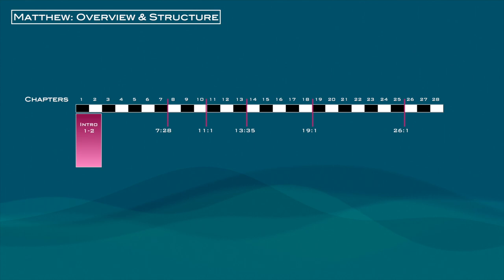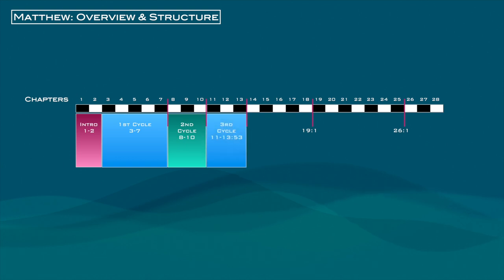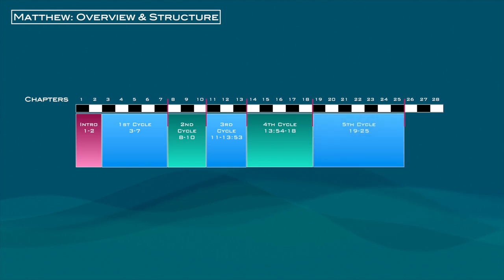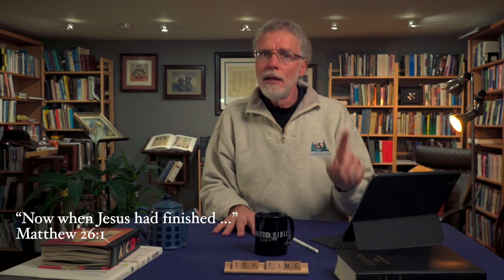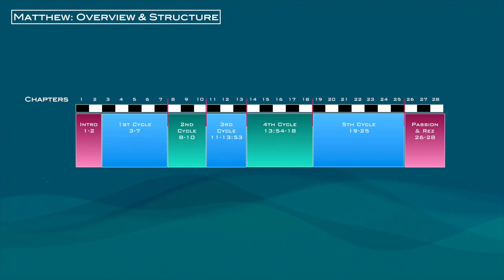Using Matthew's transitional statements, let's go back and roughly block out the remaining sections. Chapter 3 through 7 is the first cycle; 8 through 10 is the second cycle; 11 through 13 the third cycle; the end of chapter 13 through 18 is the fourth cycle; and then chapters 19 through 25 is the fifth cycle. After chapter 26, this leads us into Jesus' final meal, betrayal, arrest, crucifixion, and resurrection — the last 24 hours of his life. This section doesn't fit the pattern of the five cycles, and I've made it the same color as the prologue because many of the themes introduced in the prologue are picked up in the conclusion again.